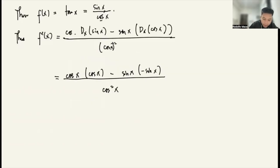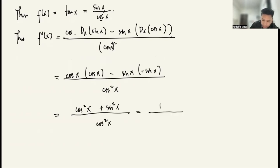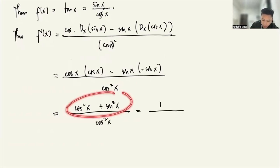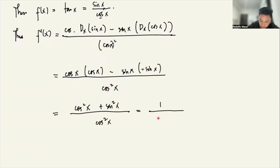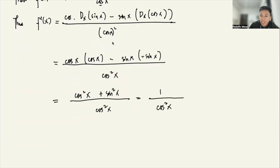So we get cosine x times cosine x, which is cosine squared x, minus sine x times negative sine x, giving plus sine squared x, all over cosine squared x. Using the Pythagorean identity, cosine squared x plus sine squared x equals 1, so the numerator is 1.